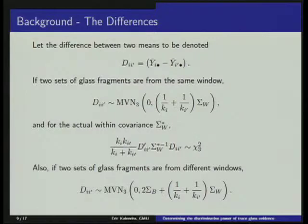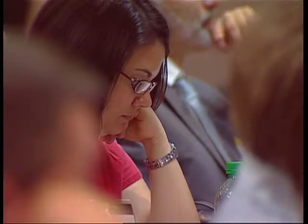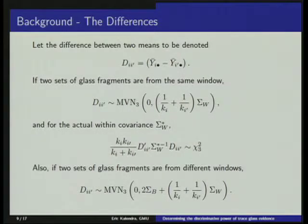When dealing with differences, we look at the difference of means between two windows: you take the average of all fragments from one group and the average from the other and take the difference. If two sets of fragments come from the same window, the distribution is only dependent upon the within-covariance structure. If they come from different windows, we have larger variation because the difference depends on the between-covariance structure as well as the within-covariance structure. The terms 1/K_i and 1/K_i' represent the sample size from each of the two samples — the number of fragments — which determines how fast that structure decreases.